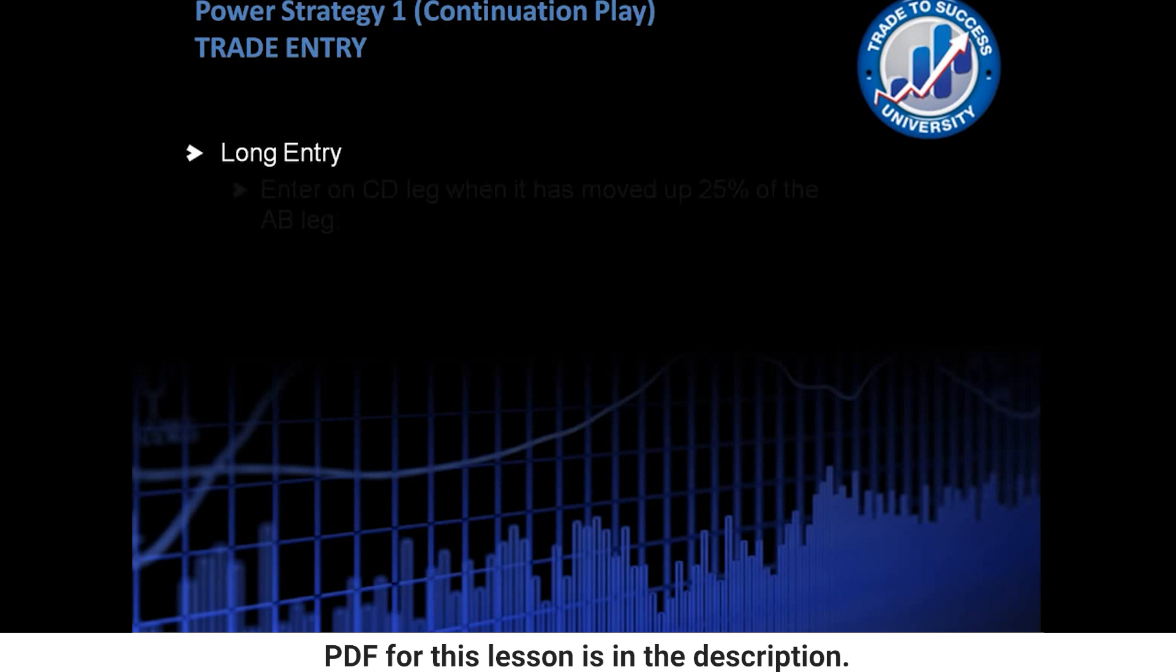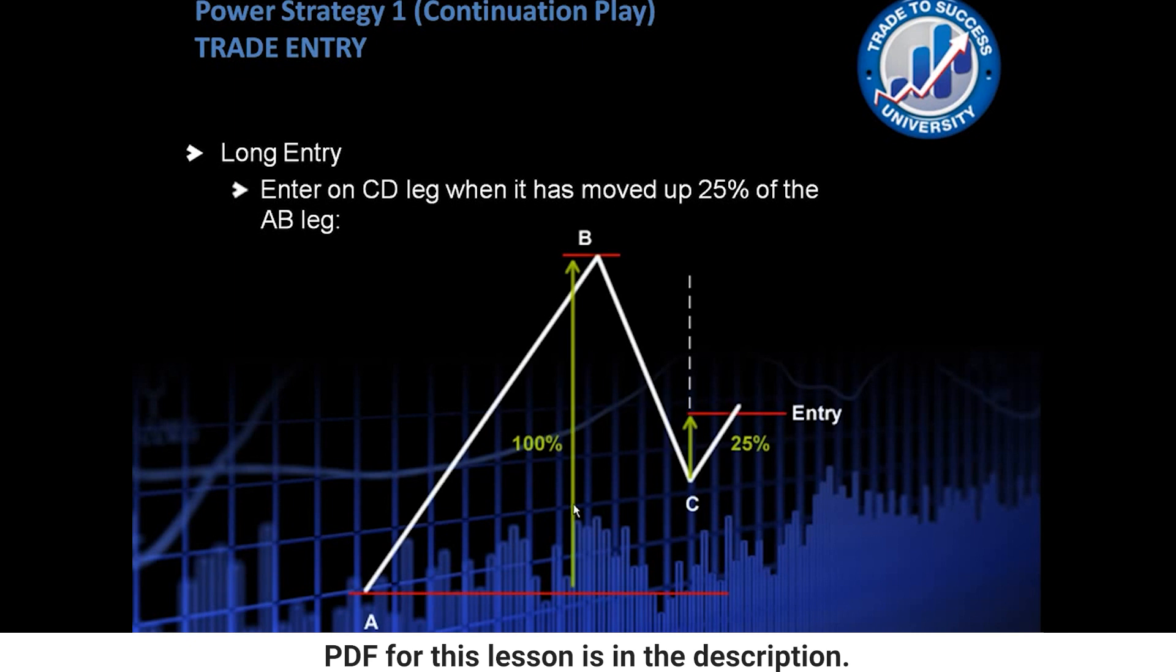Now with the long entry, we want to enter on the C to D leg when it has moved up 25% of the A to B leg. So here we have the A move up to the B, then B down to C. Now B to C is at least 50%, but less than 90% of the A to B move.